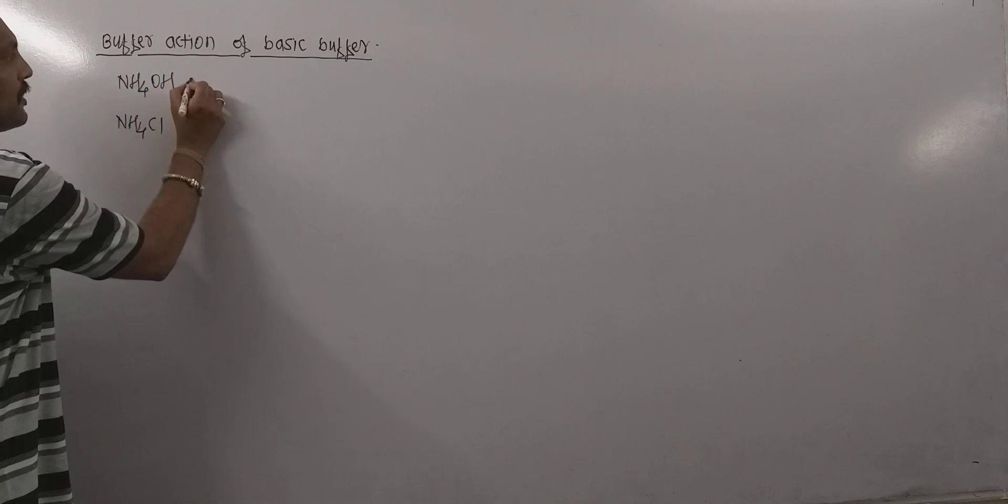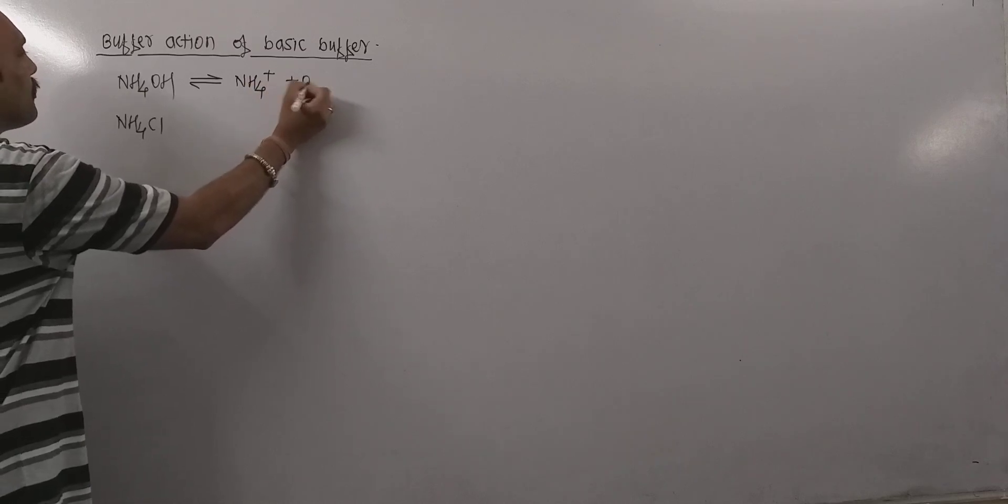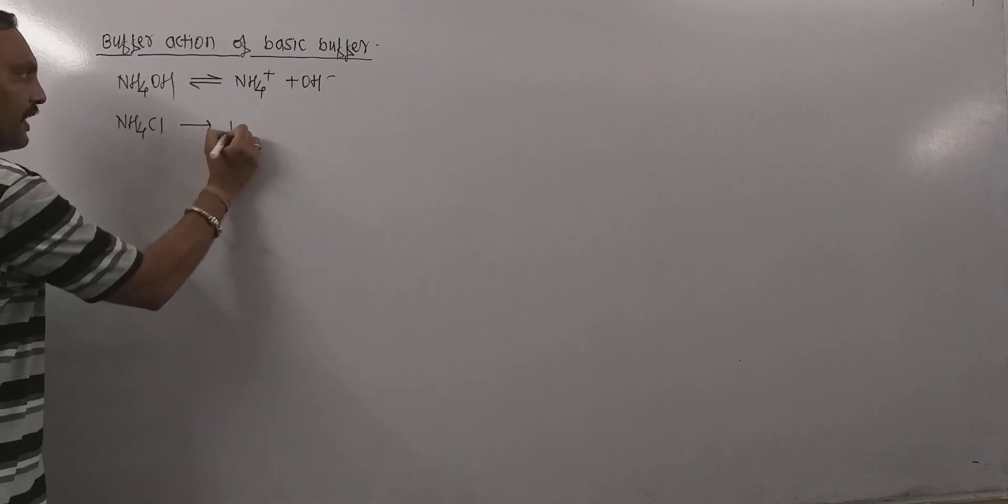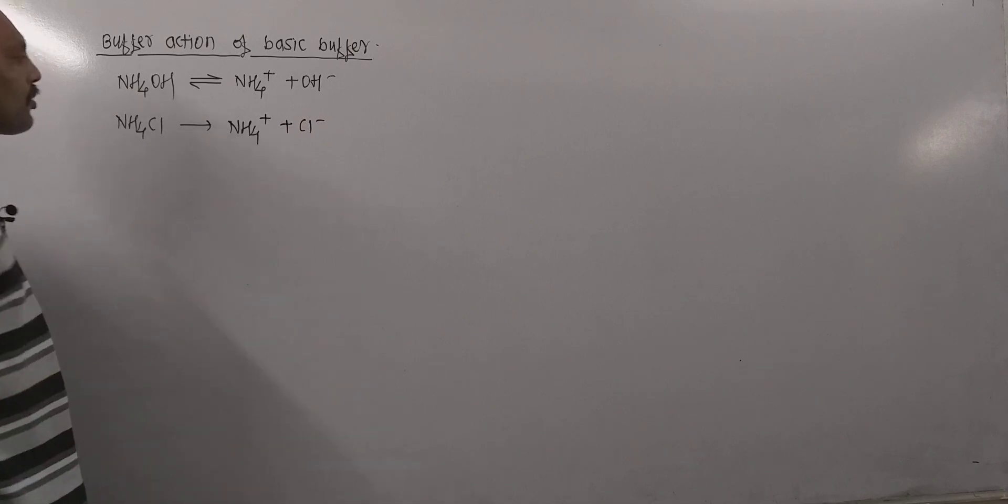NH4OH is a weak base and NH4Cl is a salt of this weak base with strong acid. NH4OH, the weak base, dissociates in a feeble manner producing less number of OH minus ions, but NH4Cl is a strong electrolyte and it dissociates completely producing NH4 plus and Cl minus ions.